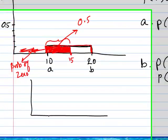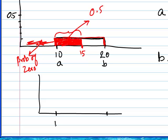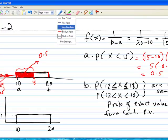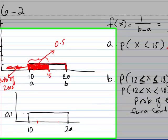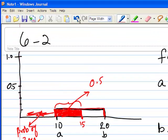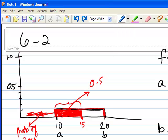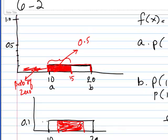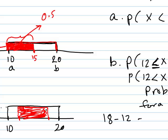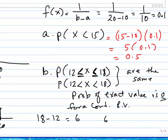Here again, the area goes from — the random variable takes on values from 10 to 20 with a height of 0.1 — but now we're interested in the area between 12 to 18. We're interested in this area right here. So we need to find out what that area is, or what's the base of that area. We have 18 minus 12, which is 6, and that multiplied by the height would be 0.6.